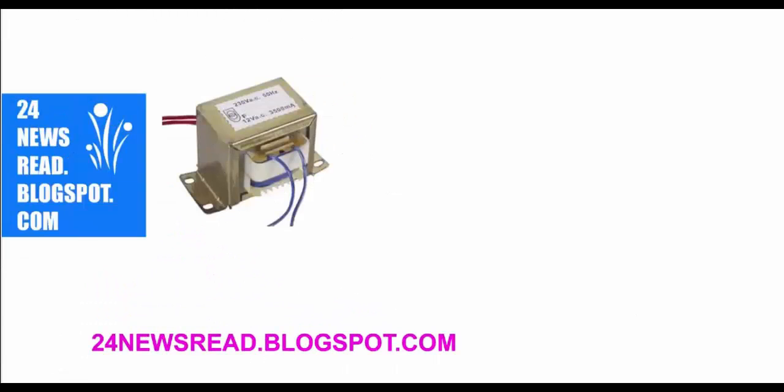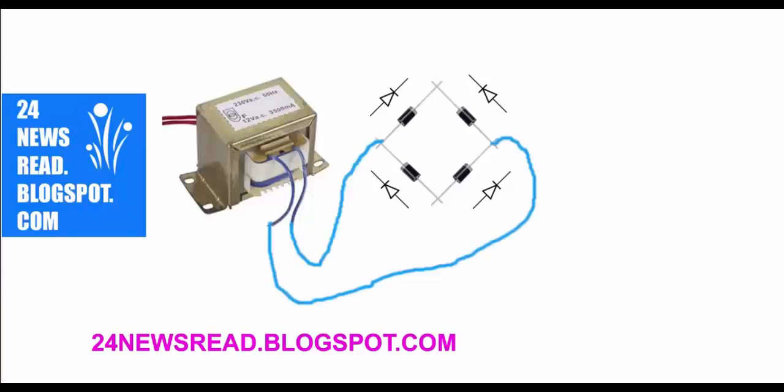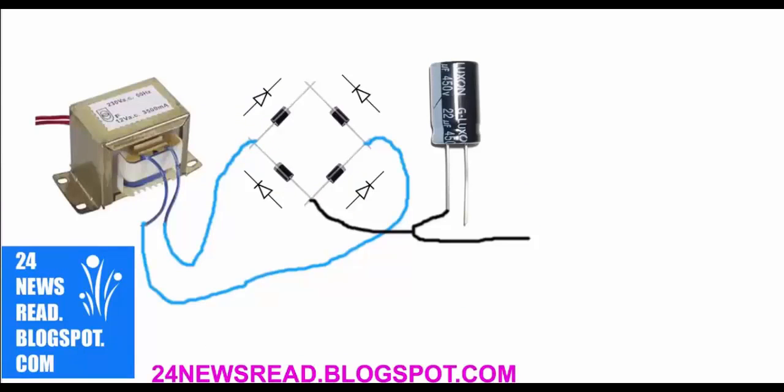First we set the transformer and set the diodes like this. Join the transformer and diodes. Now join the capacitor minus position, then join the plus position. We get 12 volt DC.